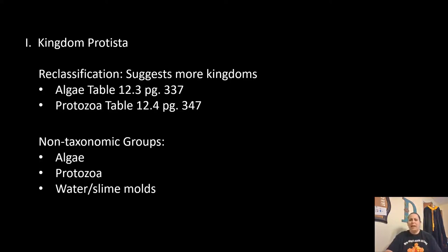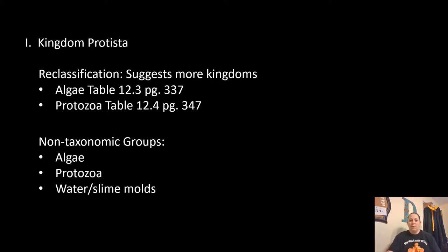We're going to look at algae and protozoa. In Protista, organisms are put into groups, but these are not taxonomic groups — they are groups based on characteristics. We'll look at algae, protozoa, and water and slime molds.